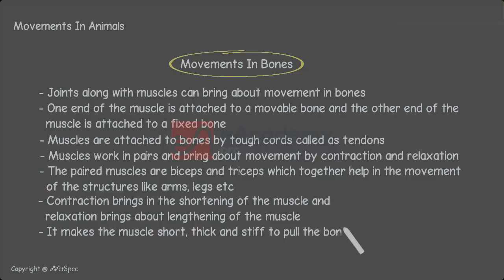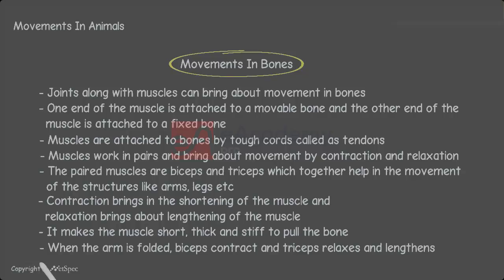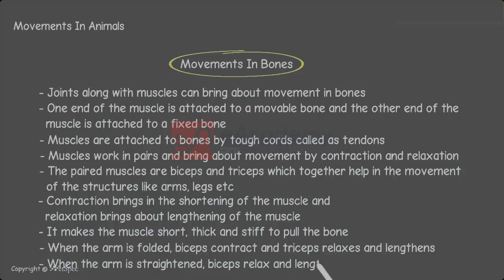During muscular contraction, the muscle becomes short, thick, and stiff so that the bone is pulled. When the arm is folded, the biceps contract and the triceps muscles relax and lengthen. But when the arm is stretched, it reverses — the biceps relax and lengthen whereas the triceps contract. In this way, muscles help in the movement of bones.